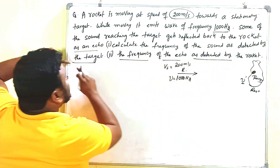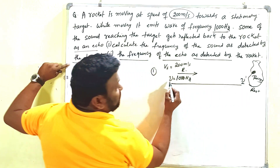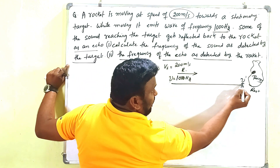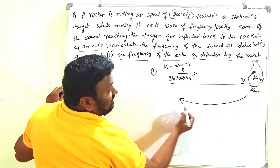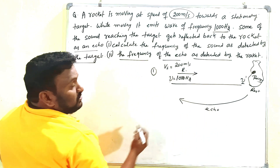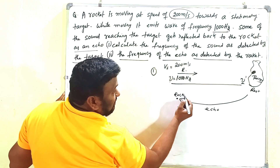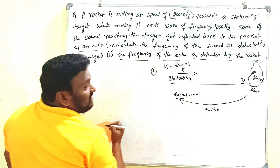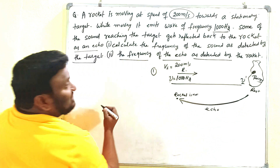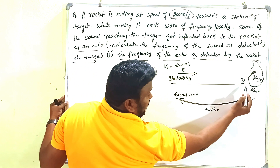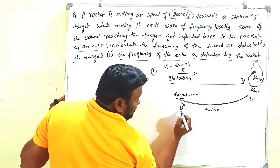The first part is: calculate the frequency of the sound as received by the target. Here ν is the actual frequency of the rocket and ν dash is the apparent frequency. The second part is: the frequency comes back in the form of an echo. The waves which come to the target are reflected as an echo. In this case, the rocket is at rest and the observer is the rocket. The frequency here is ν dash.